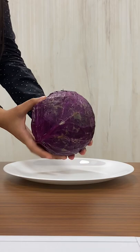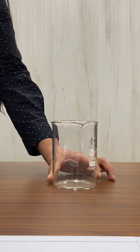Take a red cabbage and cut it into small pieces. Now, take a beaker or any container of your choice and add the small pieces of red cabbage into it.